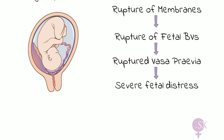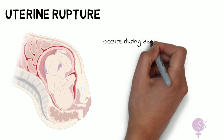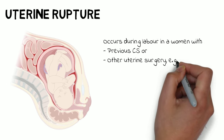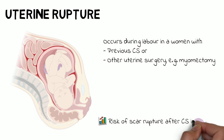Uterine rupture is when there is literally a rupture of the uterus. This usually occurs during labor in a woman with a previous caesarean section scar, or a uterine scar secondary to previous surgery such as a myomectomy. This part of the uterus will be weaker, and with contractions during labor this weak point can give way resulting in uterine rupture. Uterine rupture occurs in 1 in 200 cases after a previous caesarean section.